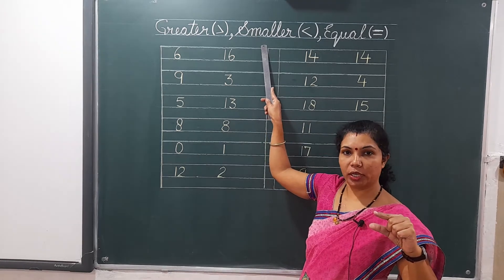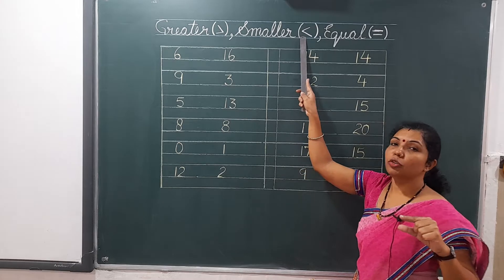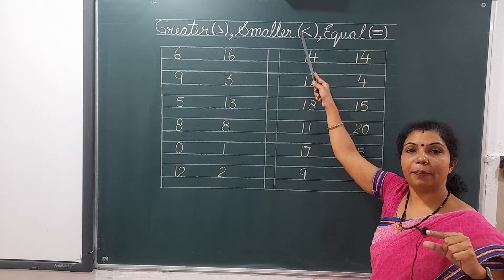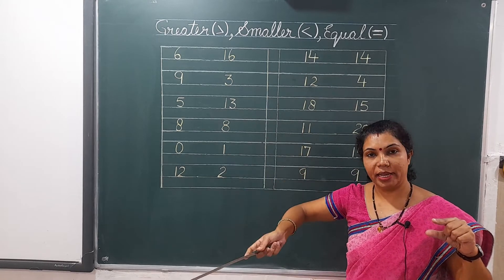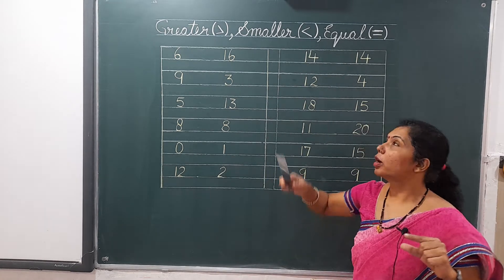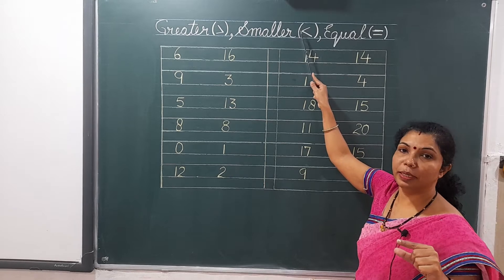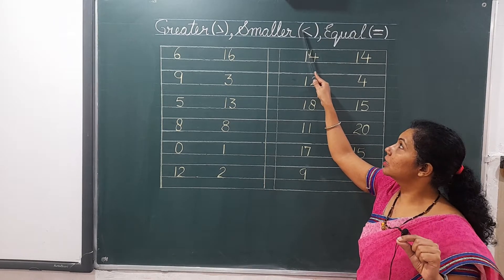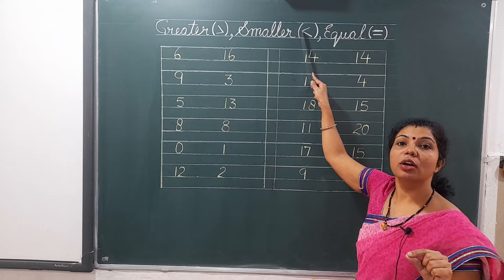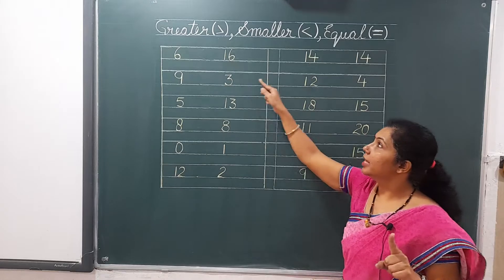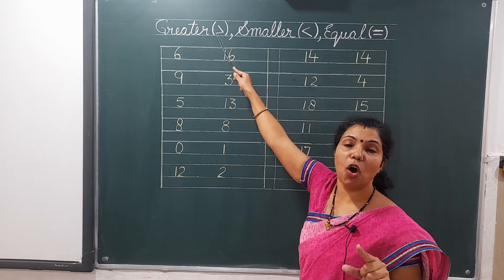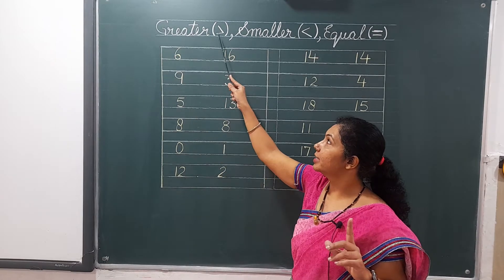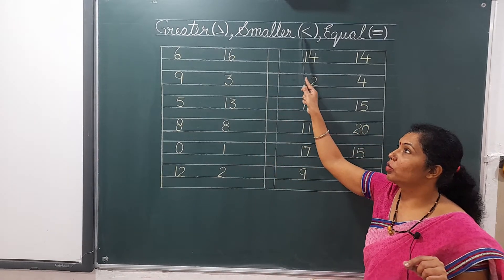And smaller means chota. Yeh bird ka jo peak hai, woh idhar band hai. Means, joh number chota hoga, ismei bhi two numbers mein jab compare karayenge, toh joh chota hooga, udhar yeh bird ka jo peak hai, woh band rahega. This smaller sign will be used for the smaller number.